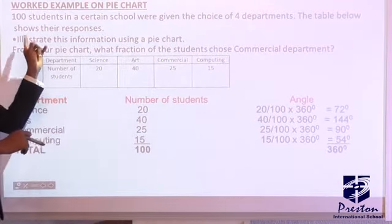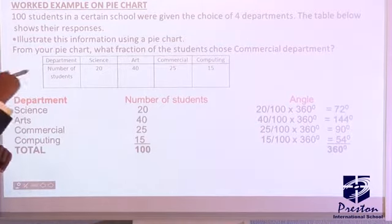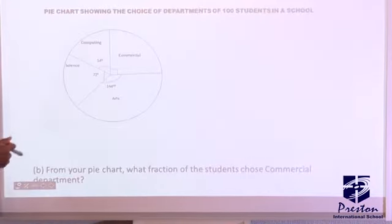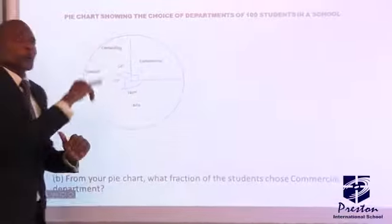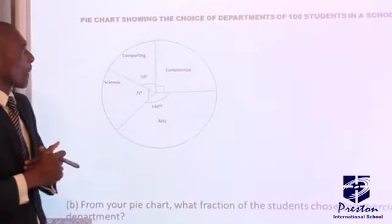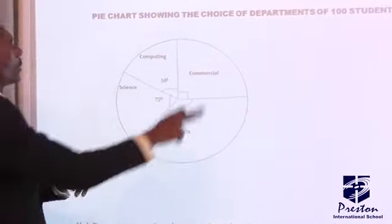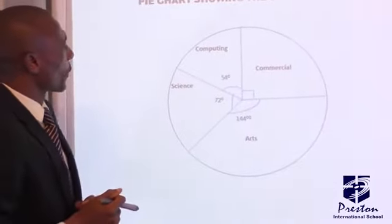Now the question is, how do we get the pie chart? Let's look at it. You draw a circle, which we've done angles before in your previous classes. Get a circle, locate the center.